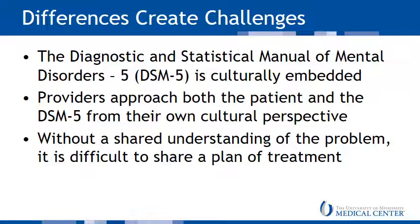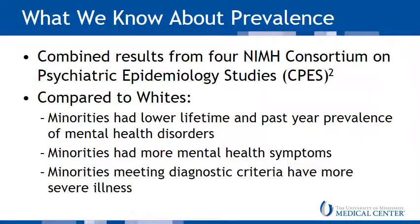Let's talk about prevalence. The National Institute of Mental Health has an entity called the Consortium on Psychiatric Epidemiology Studies, which has done a series of studies on the epidemiology of psychiatric conditions. Using Caucasians or whites as a reference group, they found a few things. Minorities have a lower lifetime and past-year prevalence of mental health disorders; however, they have more sub-diagnostic mental health symptoms. For those minorities who do meet diagnostic criteria, their illness tends to be more severe than in Caucasians.